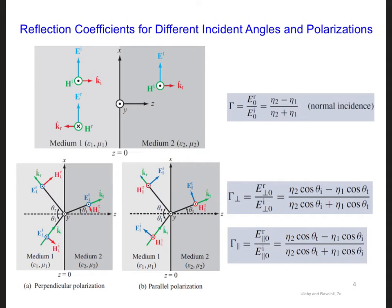This slide summarizes the reflection coefficients for different electromagnetic waves incident on a material interface. On the top, we have a wave that is normally incident, and we have a reflection coefficient expression that we used previously for the 1D code.